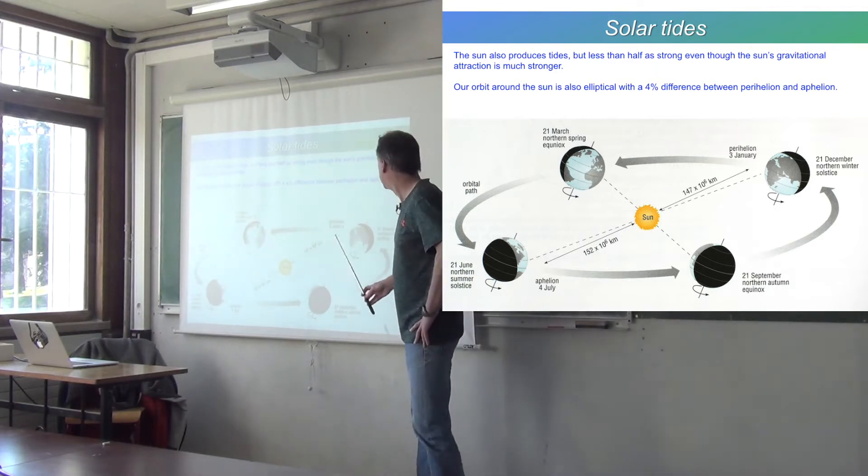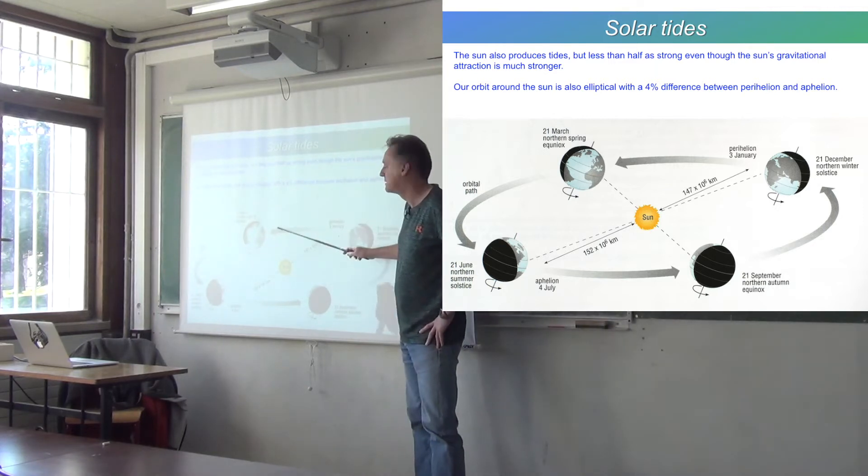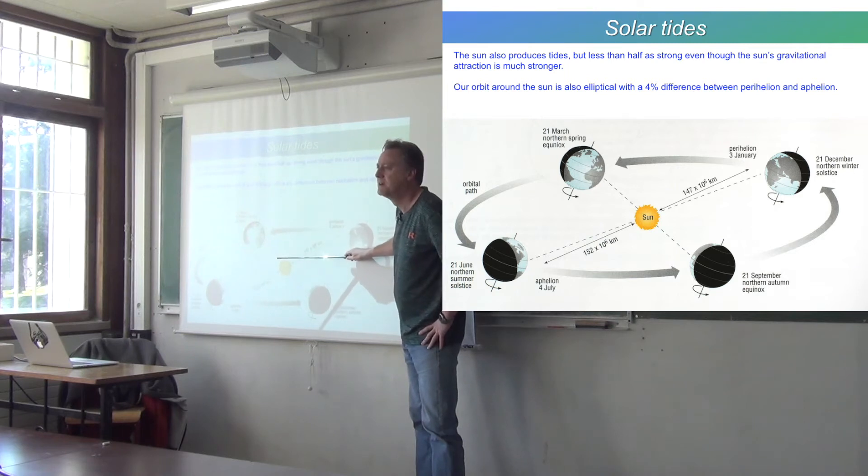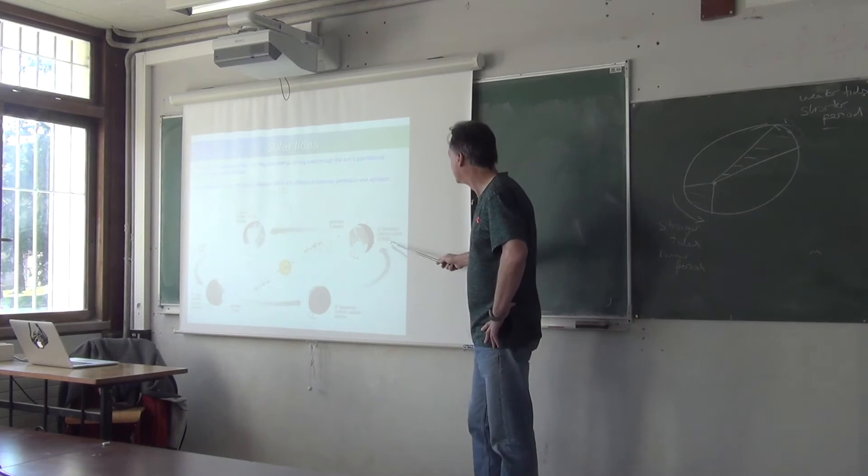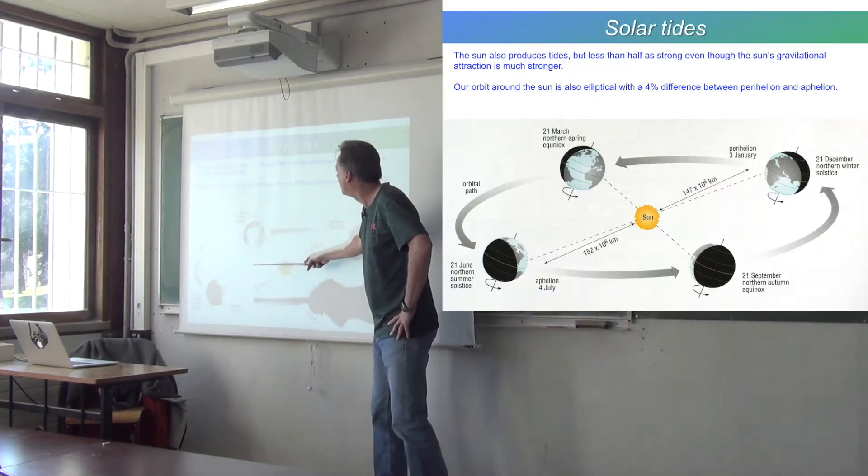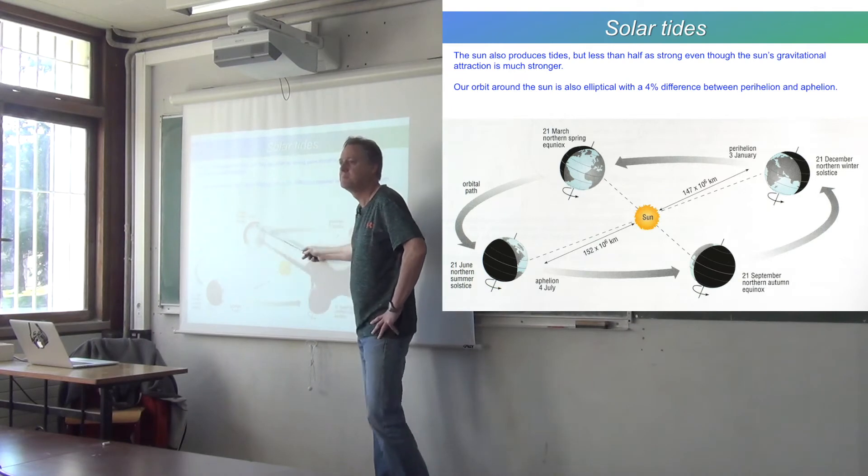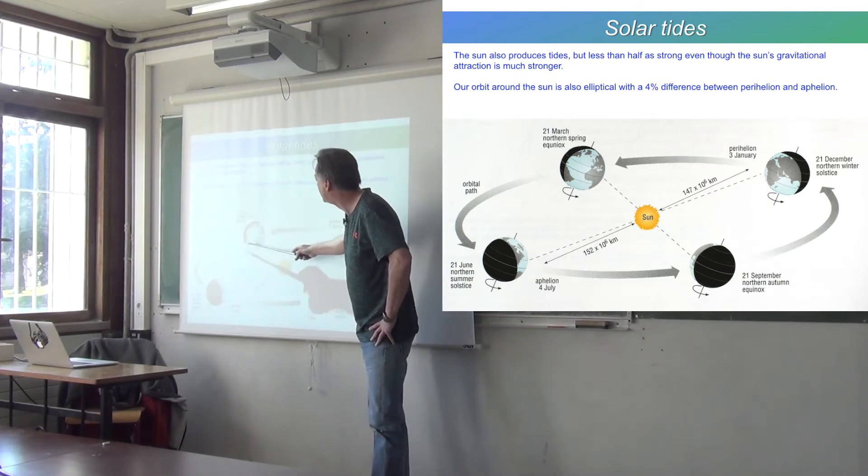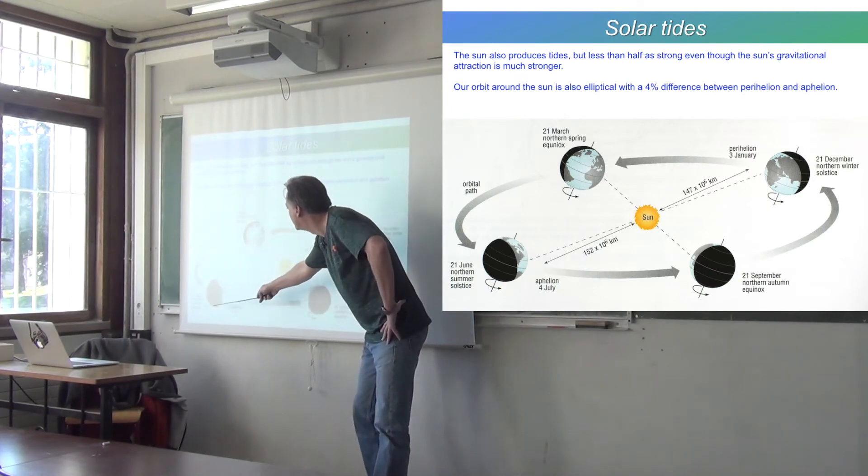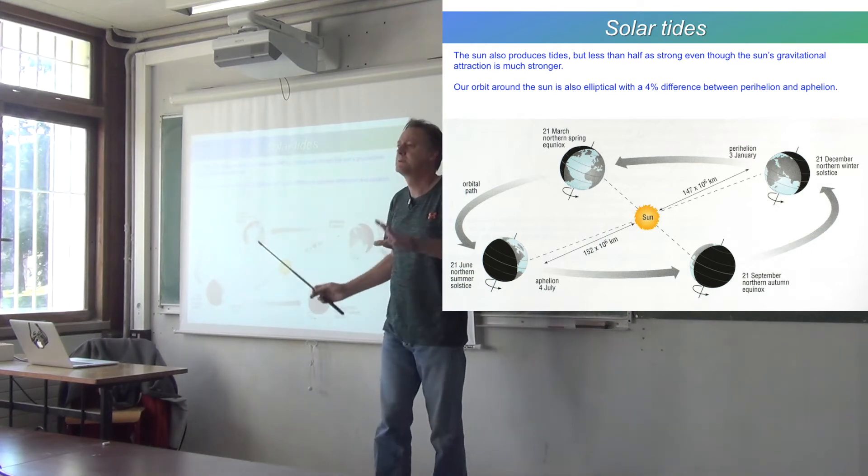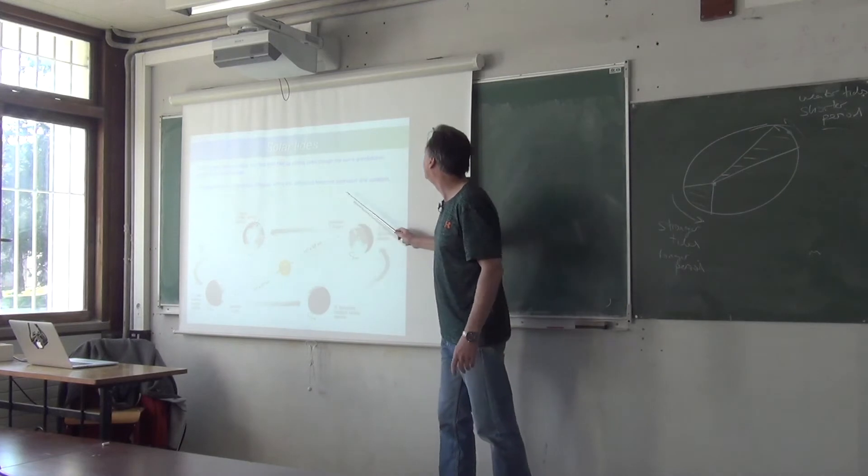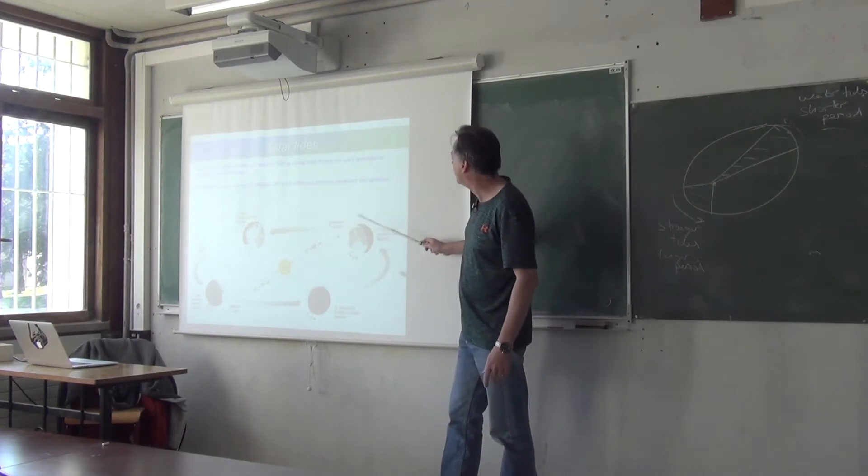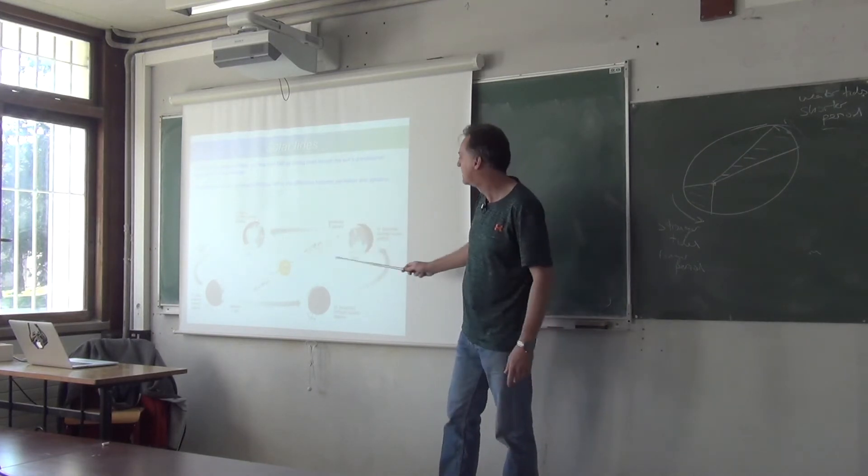And as I said before, the axis of the Earth's rotation is tilted compared to the plane of the orbit around the Sun, and that's what gives us the seasons. We have the winter solstice is the 21st of December, right? And then the equinox when the days and the nights are the same length, 21st of March, and then the summer solstice, 21st of June, or thereabouts. It varies sometimes from one day to another. So yeah, this 4% difference between perihelion and aphelion will have a small effect on the solar tide.